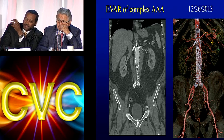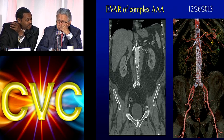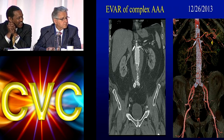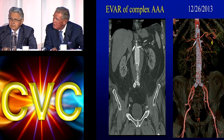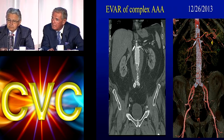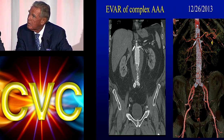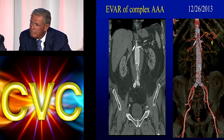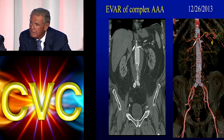Dr. Jones confirmed he had not seen this reported in the literature either — usually it's a debate between snorkel EVAR versus fenestrated EVAR. He said: 'You've created a new phenomenon — the hybrid snorkel fenestrated EVAR.' The Cook fenestrated graft was custom made in Australia with two small fenestrations, one for the SMA and one for the left renal, with original intention to cover the right renal. The ideal angulation of the right renal artery made the snorkel feasible.